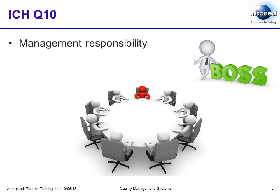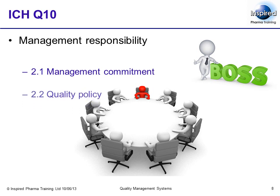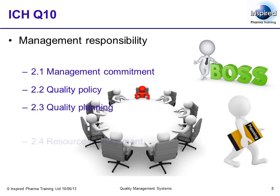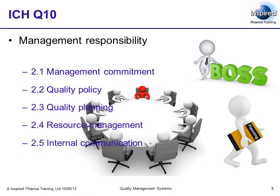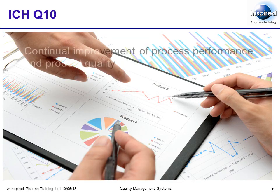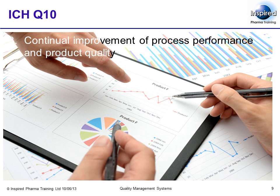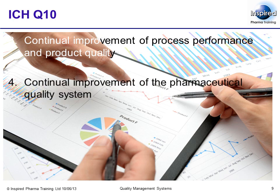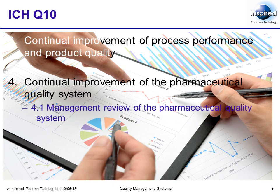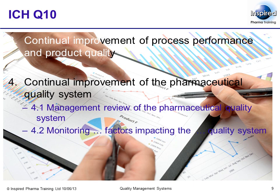Section 2 on management responsibility includes subsections concerned with 2.1 management commitment, 2.2 quality policy, 2.3 quality planning, 2.4 resource management, 2.5 internal communication, and 2.6 management review. You will know by now that these requirements are also from ISO 9001. At Section 3, we have continual improvement of process performance and product quality. Section 4 covers continual improvement of the pharmaceutical quality system, including 4.1 management review and 4.2 monitoring factors impacting on the quality system.